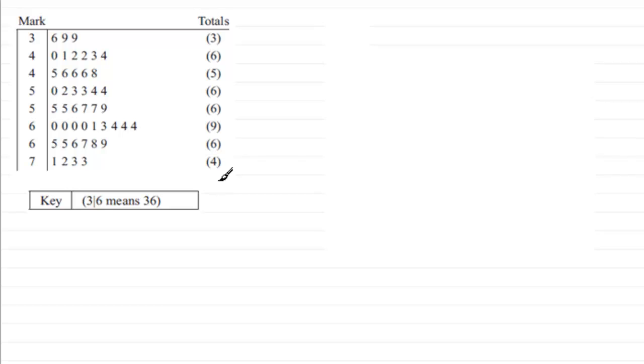Then in the second part, part b, we've got to find the lower quartile, median, and upper quartile. So let's start by looking at the modal mark of the students. That's the one that occurs the most often.